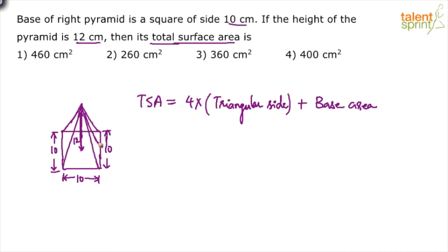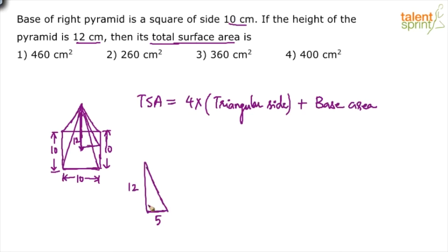The triangle will have a different height compared to the height of the pyramid. If you draw a right-angle triangle: the height of the pyramid is 12, and from the center of the base to the side of the base the distance is 5 (since the full side is 10). So we have a right triangle with legs 12 and 5. Applying the Pythagorean theorem: root of 144 plus 25 equals root of 169, which is 13. So the slant height — the height of the triangular face — is 13.